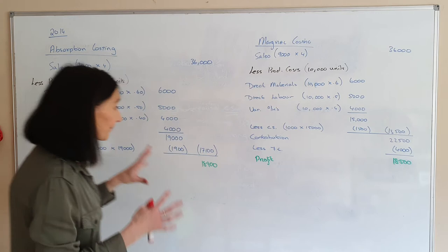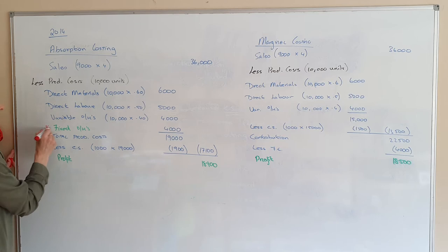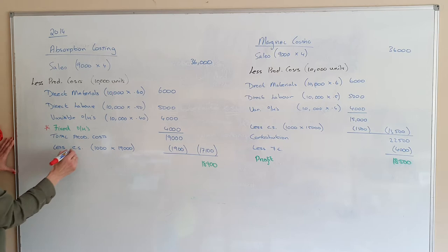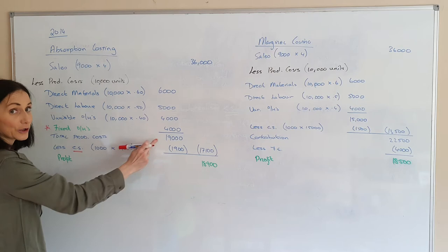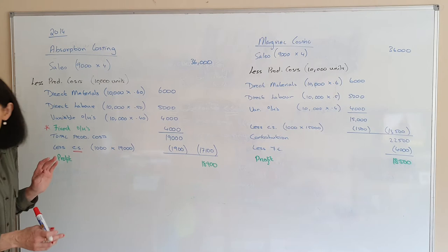My materials, direct labour, and variable overheads are the same for both. This is where the difference comes: if I'm doing absorption costing, I include fixed overheads in my total production costs. That means when I'm getting my closing stock figure, I'm basing it on all my production costs. I have 1,000 units of stock left over — that's 1,000 out of 10,000 produced.